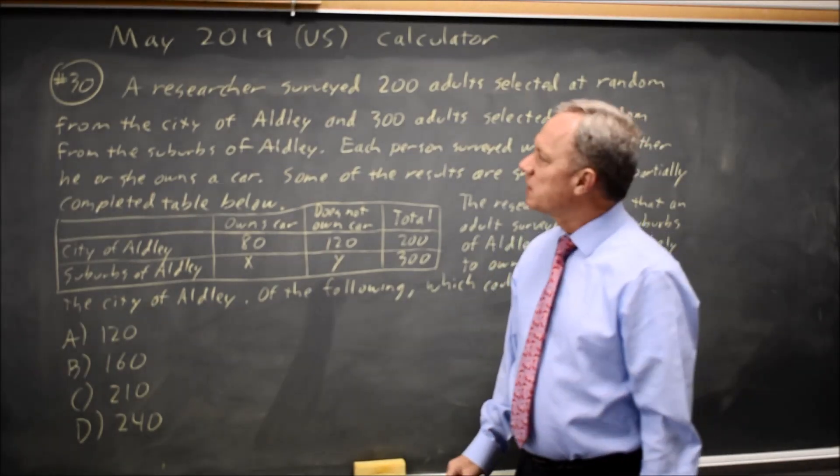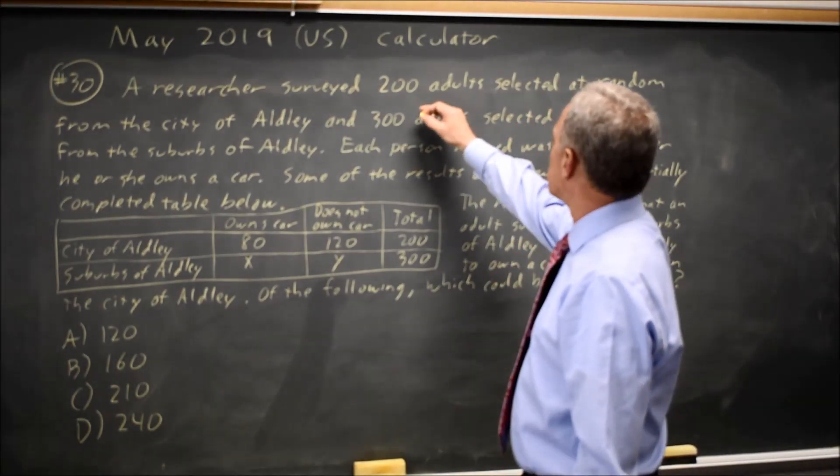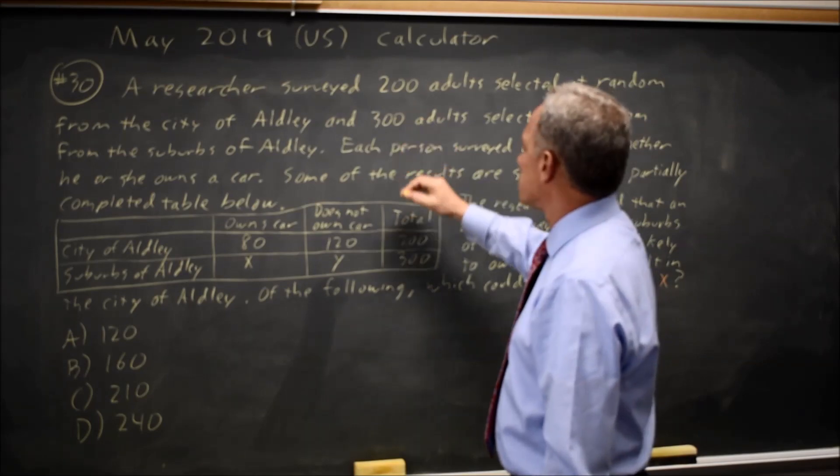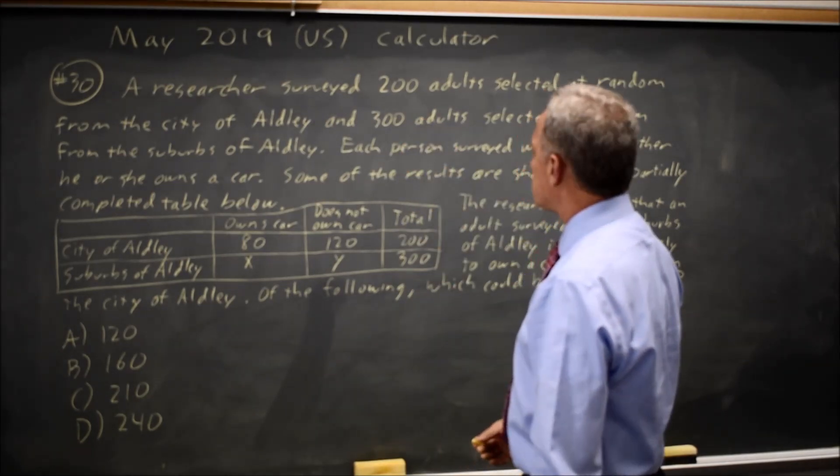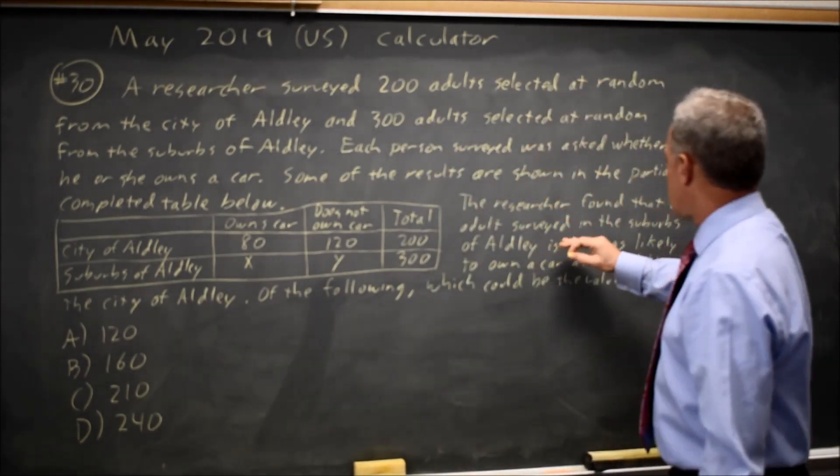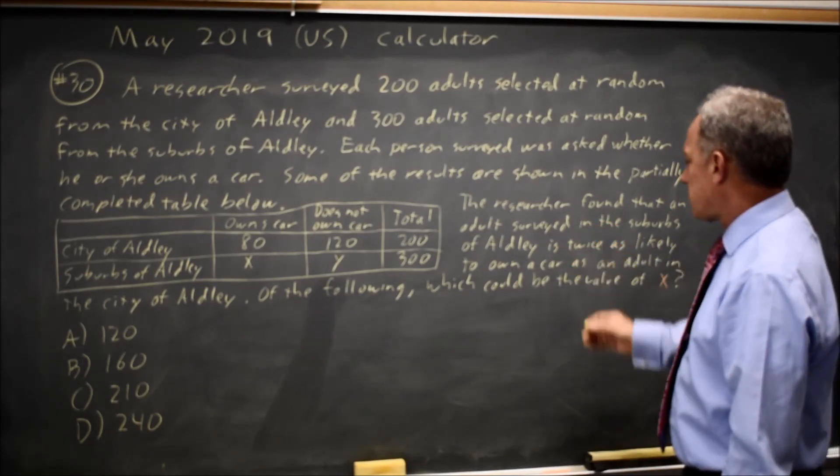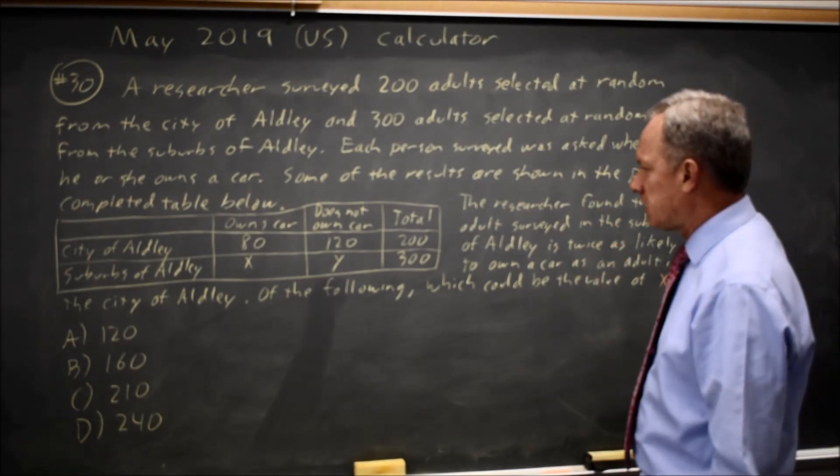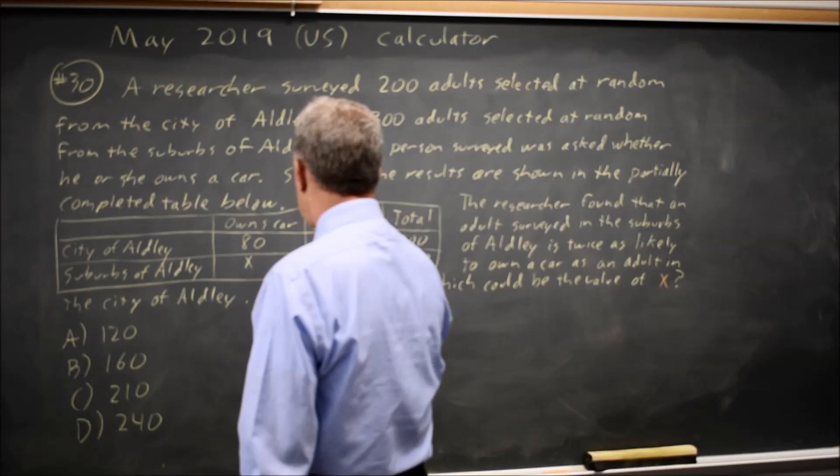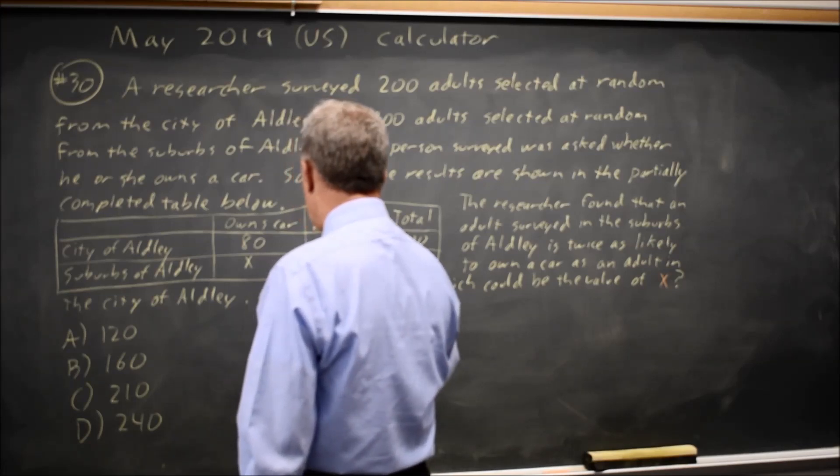This is calculator question number 30. A researcher surveyed 200 adults from the city and 300 from the suburbs and found that adults in the suburbs are twice as likely to own a car as adults in the city.